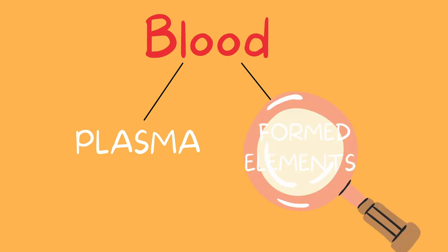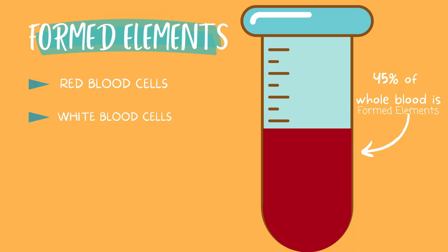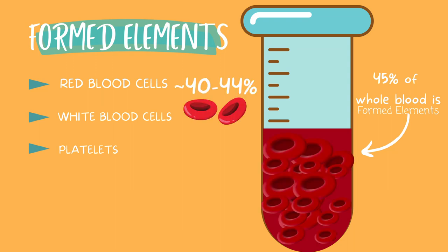Let's take a magnified look at the formed elements first. 45% of the entire blood is formed elements, and these include the red blood cells, the white blood cells, and the platelets. Your red blood cells take up about 40 to 44% of the formed elements. You will find them settled at the bottom of the vial because they are the most dense of all the properties in the blood.